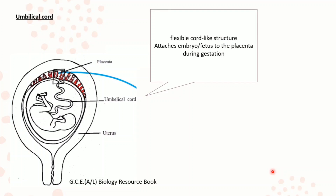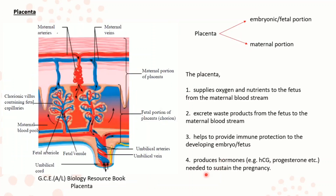The umbilical cord is a flexible cord-like structure which contains blood vessels and attaches the embryo or fetus to the placenta during gestation. The oxygen-poor blood from the embryo and fetus travels to the placenta through the two arteries of the umbilical cord, and passes through the finger-like projections of the placenta where oxygen and nutrition are acquired. The oxygen-rich blood leaves the placenta through the umbilical vein, leading back to the embryo or fetus.